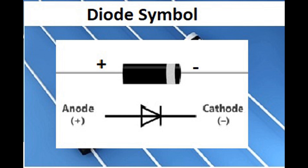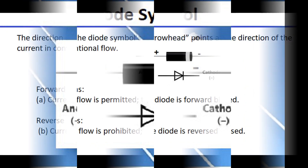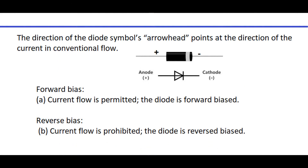This is the symbol of a diode. The direction of the diode symbol's arrowhead points the direction of the current flow in a conventional flow.